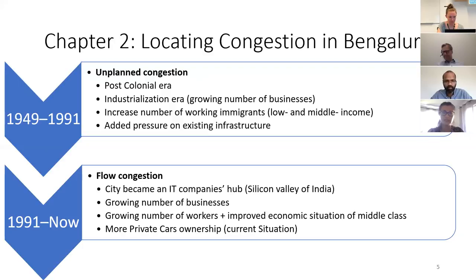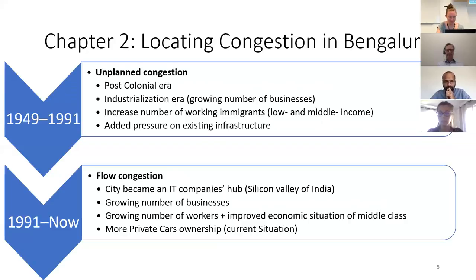The third layer was 'unplanned congestion,' from 1949 to 1991. In this period, the number of businesses was growing, which caused an increased number of low- and middle-class workers, stressing the city's infrastructure. The final layer is 'flow congestion,' from 1999 until now. Businesses continued growing, the economic situation of middle-class workers improved, and the city became a hub for IT enterprises.